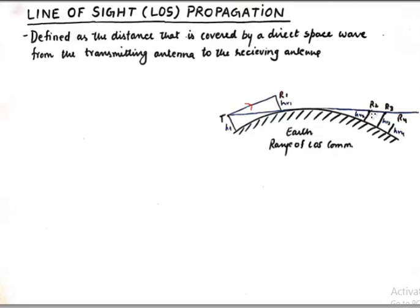Receiving antenna R2 also falls into line of sight propagation — just barely. The height of receiving antenna R3 is significantly larger compared to R2, and that is what makes it fall under the line of sight propagation category because T and R3 can see each other. However, R4 is too short and needs to be of very significant height in order to counter the curvature of the earth. So you can see that the curvature of the earth plays a very important role in determining the range of line of sight propagation.